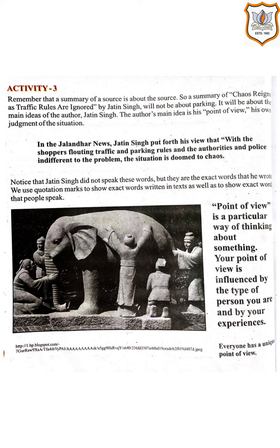Next we have Activity 3. Remember that a summary of a source is about the source. So a summary of 'Chaos reigns as traffic rules are ignored' by Jatin Singh will not be about parking — it will be about the main ideas of the author, Jatin Singh. The author's main idea is his point of view, his own judgment of the situation. Whatever the author or writer wants to say, that will be his point of view. For example, if an incident is happening, you will describe it.